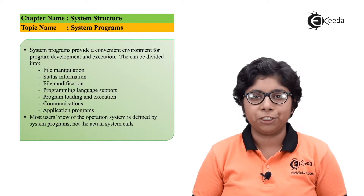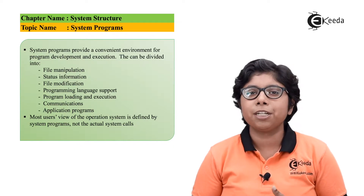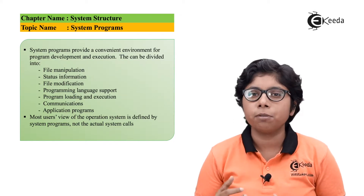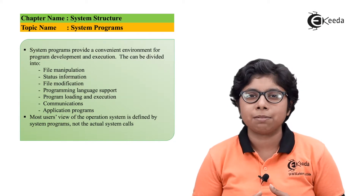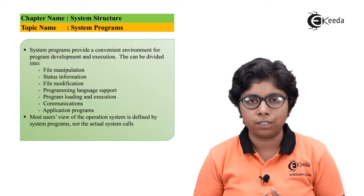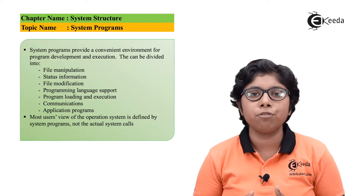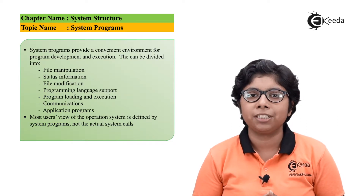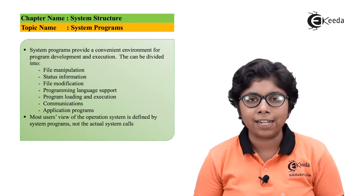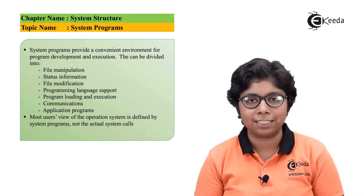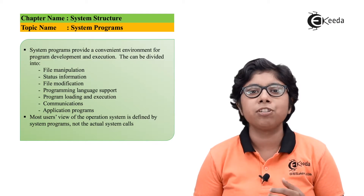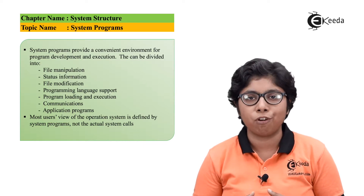The next category is status information. Some systems can provide basic information like the system's current date, the number of users, the version of the operating system, or the amount of available memory. Some systems may use detailed performance, debugging, and logging information. This information can be output directly to the terminal, to storage devices or files, or even to a window in a GUI system. Some systems use a registry, which is a storage structure where configuration information can be stored and retrieved.